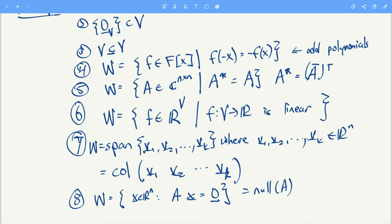You could look at the set of functions from V to R which are linear functions. So these are called linear functionals. You could look at the span of k vectors from R^n. That's also the column space of an n by k matrix. Or you could look at the subspace W of all vectors x such that Ax equals zero where A is a matrix. That's also known as a null space of A.